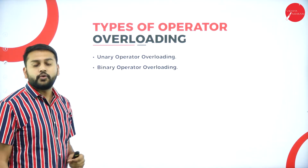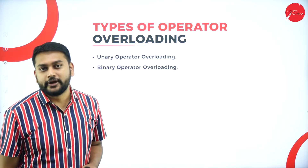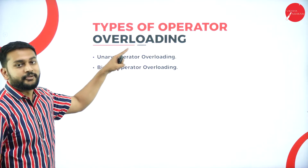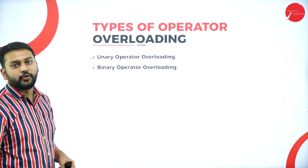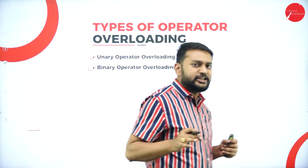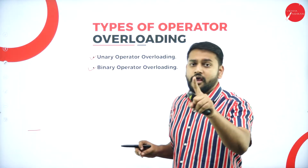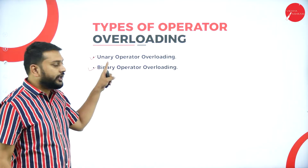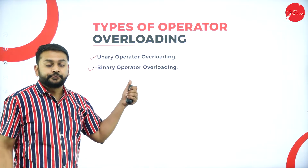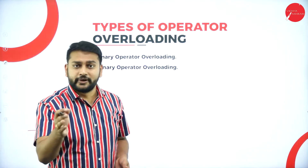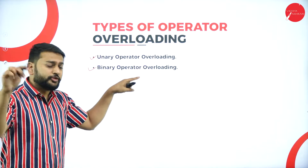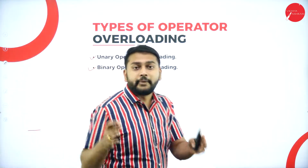Now let's understand the types of operator overloading. How many types do we have? We have two types of operator overloading — I'm focusing on operator overloading, not method overloading. When it comes to operator overloading, we have unary operator overloading and binary operator overloading. If you are able to perform the operation with one operand, that is a unary operator. If you are changing the meaning of a unary operator, that is unary operator overloading. If you change the meaning of a binary operator, that is binary operator overloading.